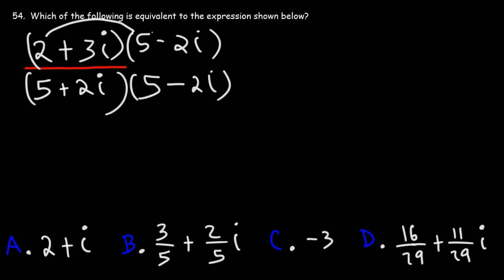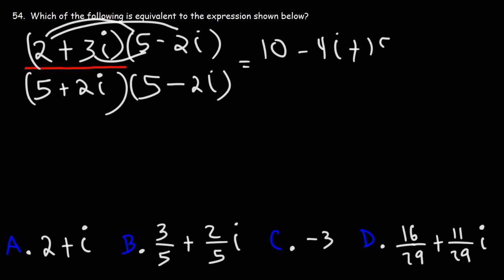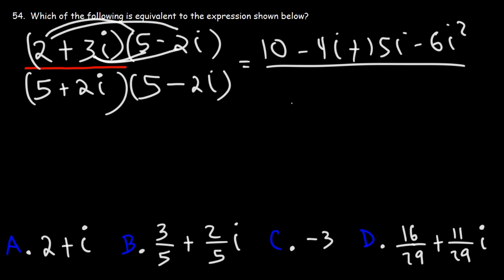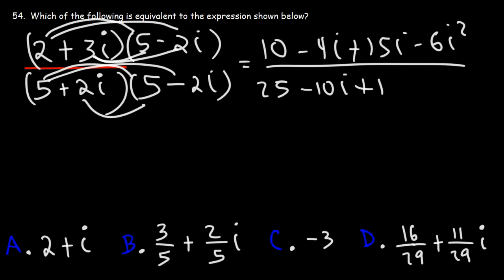On the numerator: 2 times 5 is 10, then 2 times negative 2i is negative 4i, then 3i times 5 is 15i, and then 3i times negative 2i is negative 6i squared. On the denominator: 5 times 5 is 25, then 5 times negative 2i and 2i times 5, and then 2i times negative 2i is negative 4i squared.